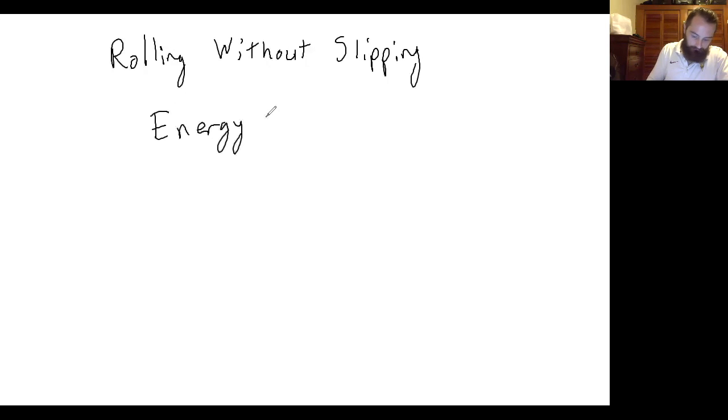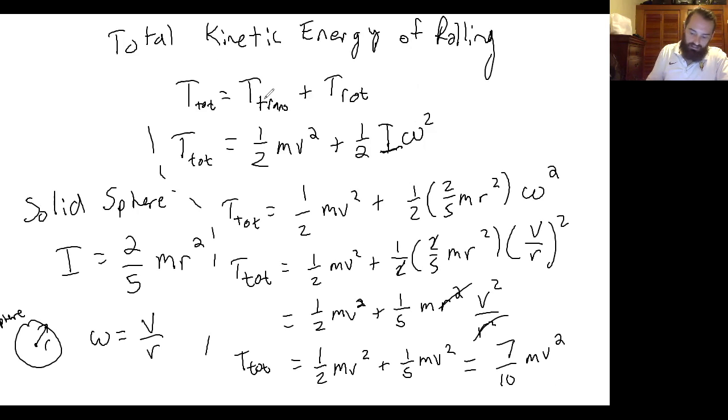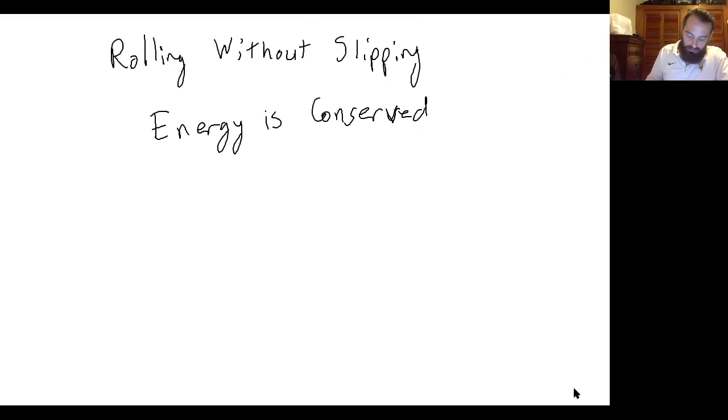And so one more note, and this is more about vocabulary: if we say that something is rolling without slipping, this is just another way of saying that energy is conserved. In the example I gave here, this is an example of rolling without slipping. So just keep note of this kind of vocabulary and know that rolling without slipping means that energy is conserved.